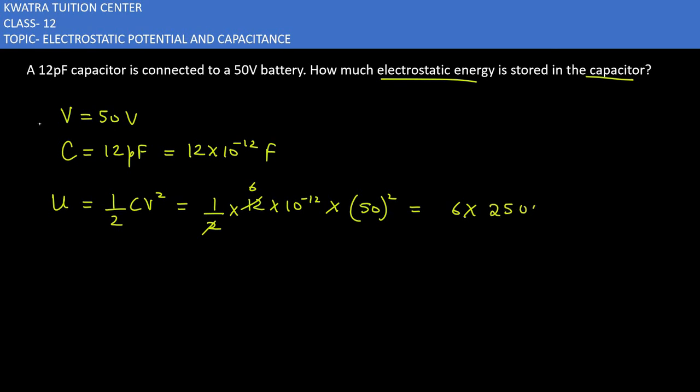It will be 5 square, 25, and double 0 into 10 to power minus 12. So finally what is your value?